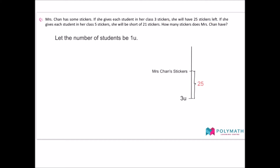Reading further, if she gives each student in her class five stickers, she will be short of 21 stickers. That means Mrs. Chan's number of stickers is less than five units — and how much less? That's by 21 stickers. So we draw five units above Mrs. Chan's stickers by 21. Now that we have the model, we can see that the difference between five units and three units, which is two units, is actually equal to the sum of 21 and 25.